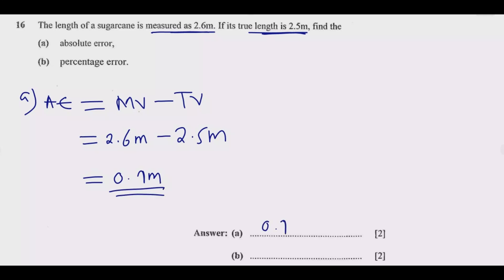So this 0.1 meter is the absolute error, which is the error in measurement.